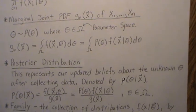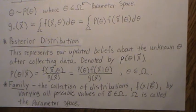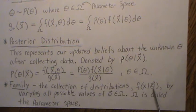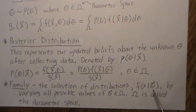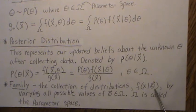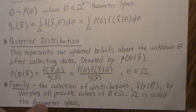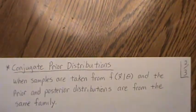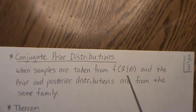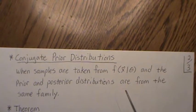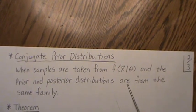A family is a collection of distributions, call it F of X given theta. By varying all possible values of theta in Omega, where Omega is the parameter space, it creates a family of distributions. A conjugate prior is when samples are taken from some likelihood distribution and the prior and posterior distributions are from the same family. We have three theorems to prove regarding conjugate priors.